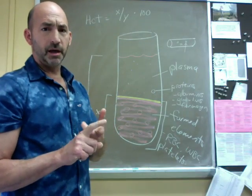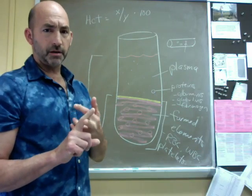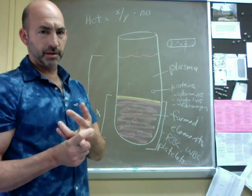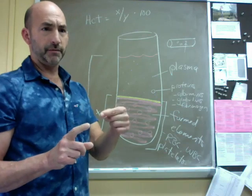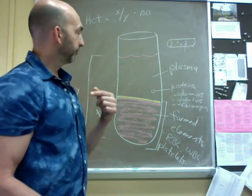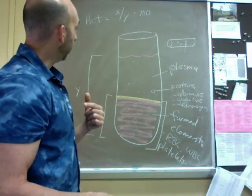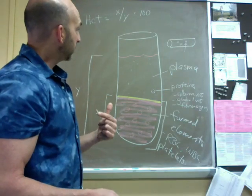The last component would be the platelets or the thrombocytes. We talked about them in hemostasis—they have to become activated and then start to stick to each other and the walls of the vessels to help the initiation of a blood clot.